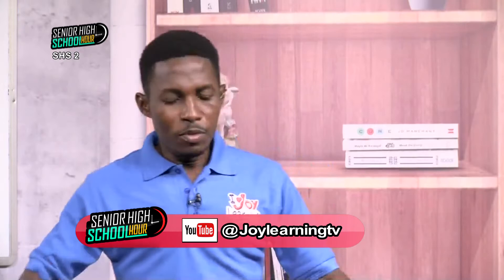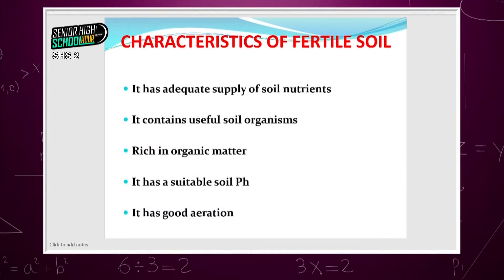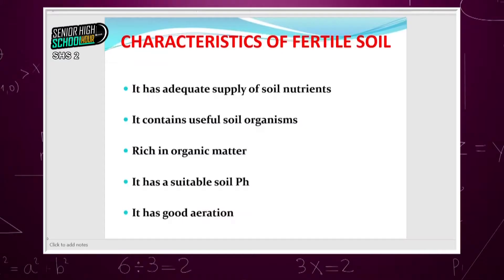The last area to look at is soil fertility. If the soil has all the nutrients in good amounts, adequate air, adequate water, and adequate soil quantity, then the soil is fertile. The characteristics of a fertile soil are: adequate supply of soil nutrients, content useful for soil organisms, rich in organic matter, suitable pH, and good aeration. This is the first part of our soil study — we'll come back with part two, looking at other aspects such as soil loam, sand testing, texture, and more.